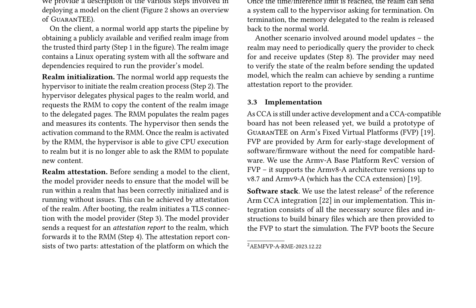The model provider verifies the attestation report and sends the model to the Realm if verification is successful. The Realm then announces its readiness to perform inference to the normal world via the hypervisor, reads input data, feeds it into the model, obtains the inference, and writes the output back to normal world memory. GUARANTEE also accounts for other aspects of a model's lifecycle, such as imposing limits on the service or periodic model updates. In these scenarios, the Realm may need to query the provider for updates, which may require a runtime attestation report to verify the state of the Realm.